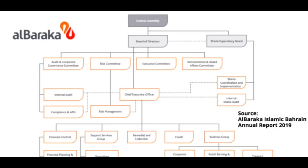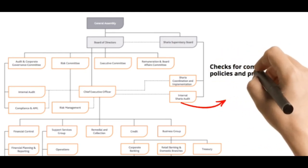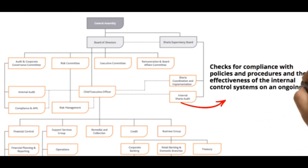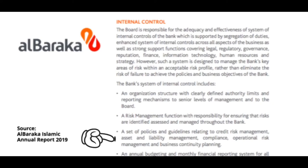Because each Islamic bank has different control mechanisms due to the decentralized model, let's take one example: Al-Baraka Islamic Bank of Bahrain. Al-Baraka Islamic Bank of Bahrain has a Sharia Supervisory Board which is responsible to ensure all operations and activities are in compliance with Sharia principles, as well as to monitor and supervise transactions to ensure full compliance with the Board's decisions. In addition to the Sharia Board, they also have an internal Sharia audit, which checks for compliance with policies and procedures and the effectiveness of internal control systems on an ongoing basis, acting as an independent department reporting directly to the Sharia Supervisory Board. Al-Baraka Islamic's internal control also includes an organizational structure with clearly defined authority limits and reporting mechanisms, a risk management function, as well as a set of policies and guidelines relating to credit risk management, asset and liability management, compliance, operational risk management and business continuity planning.